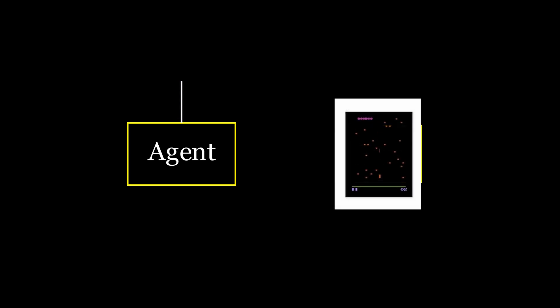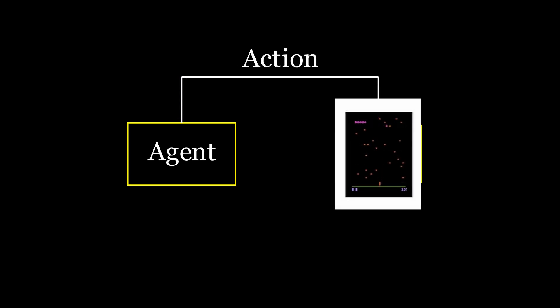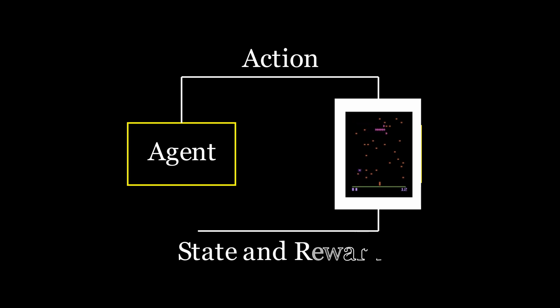Before we get into the details of this algorithm, it would be good to explain the actual dynamics of reinforcement learning — meaning how does the agent interact with the environment and vice versa, and what information gets transferred between these two things. Given an agent or an algorithm, that algorithm selects an action. That action gets routed to the environment, and then the environment gives the next state and the reward back to the agent.